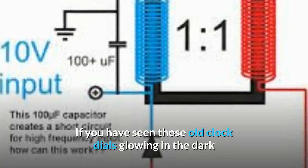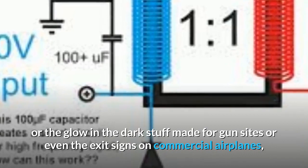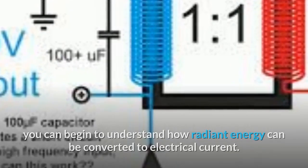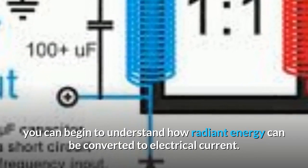If you have seen those old clock dials glowing in the dark or the glow-in-the-dark stuff made for gun sights or even the exit signs on commercial airplanes, you can begin to understand how radiant energy can be converted to electrical current.